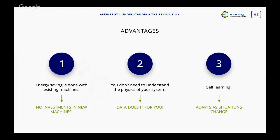A key advantage is that machine learning algorithms learn from data, so they adapt as situations change. If your machines get older and start working differently because their performance has degraded, your algorithm will find that out and adapt. So your energy optimization model always represents the real functioning state of your machines — not just some physics you derived at the beginning of time that no longer holds because the machine got old.